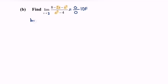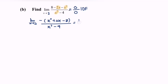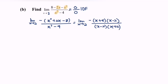Limit when x approaching 2 — rewrite the situation, factoring out the negative. We have negative multiplied by x squared plus 2x minus 8, over x squared minus 4. Factorize: negative times (x plus 4)(x minus 2), over (x minus 2)(x plus 2). Notice there are common terms, so we can simplify.